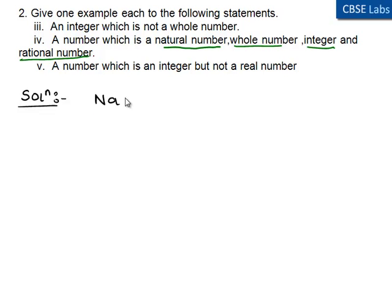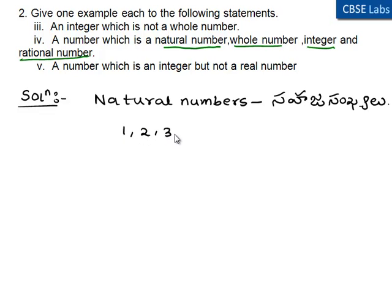Natural numbers, anaga sahaja sankhelu, are the numbers which are counting numbers starting from 1, 2, 3, 4, 5 and so on up to n.